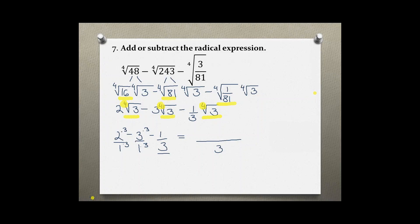So now 2 times 3 is 6, then 3 times 3 is negative 9, and the last one stays the same.